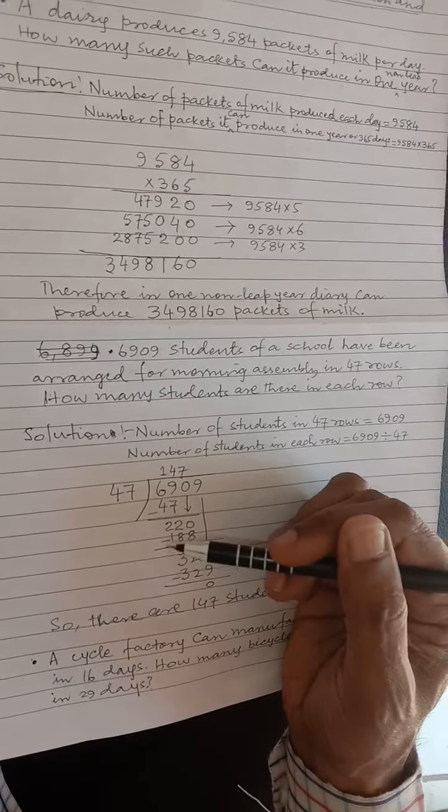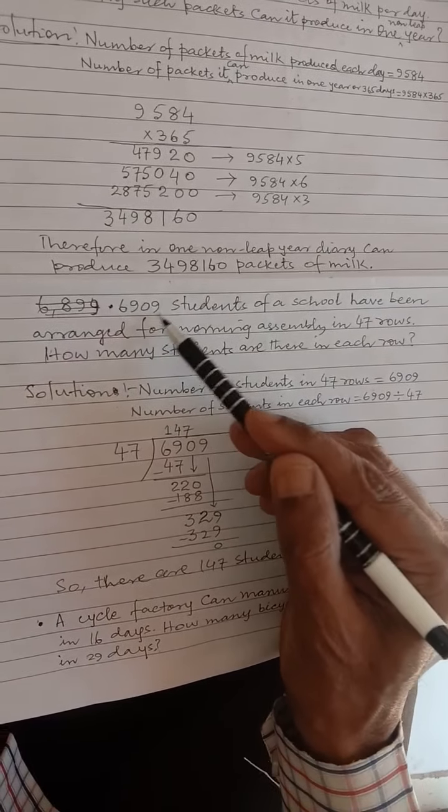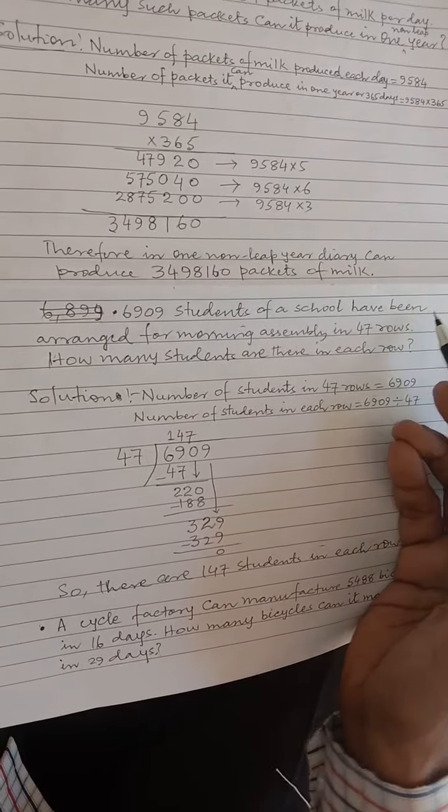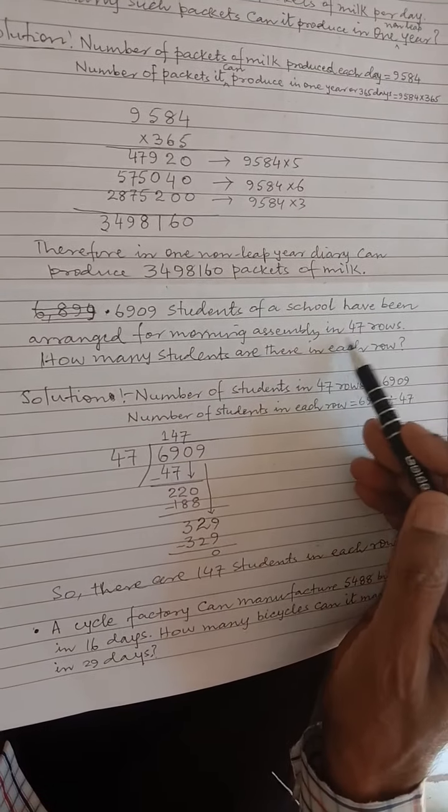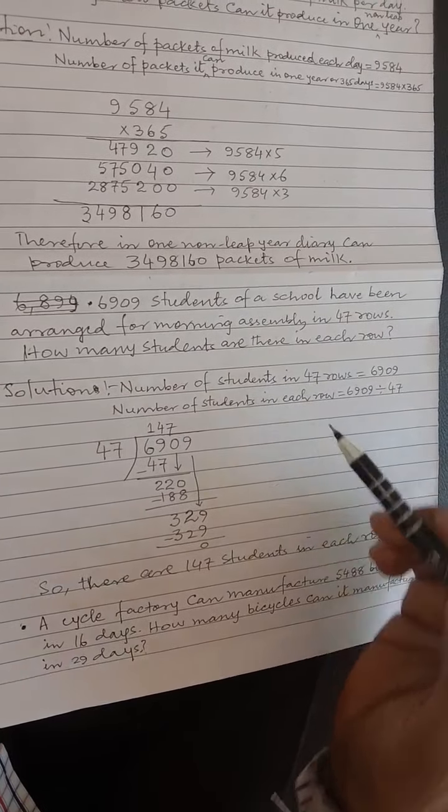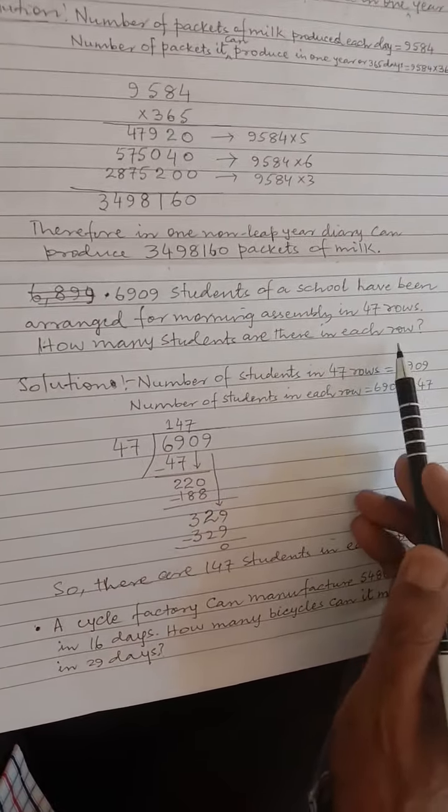We take another example. 6,909 students of school have been arranged for morning assembly in 47 rows. How many students are there in each row?